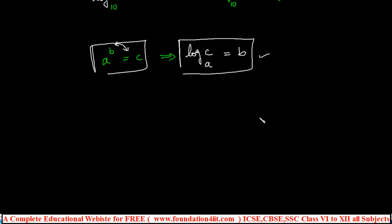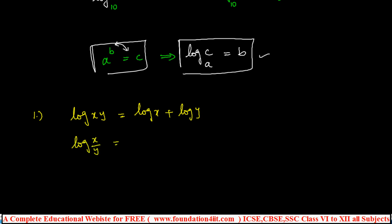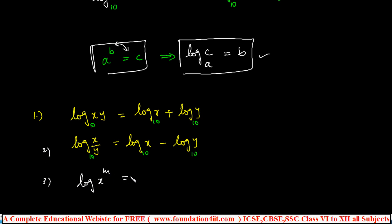There are mainly three logarithm formulas to remember. First: log(x × y) = log x + log y — if there is a multiplication symbol, you can separate it with a plus. Second: log(x / y) = log x − log y — division becomes subtraction. Third: log(x to the power m) = m × log x — the power can be moved to the front. Base 10 applies when no base is mentioned.